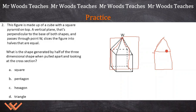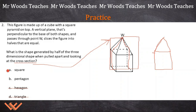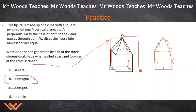This is a cross section. It says, what is the shape generated by half of the three-dimensional shape when pulled apart and looking at the cross section? Is it square? Well, we do have a square. A pentagon? Definitely not a triangle, definitely not a hexagon. It has a square in it, but it's not that. Just by eliminating the different choices — a pentagon is five sides. One, two, three, four, five. Yep, there's definitely five sides to that. So my answer is pentagon.